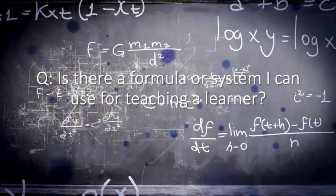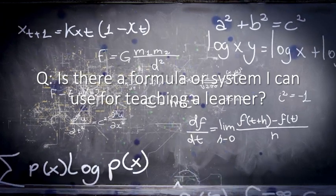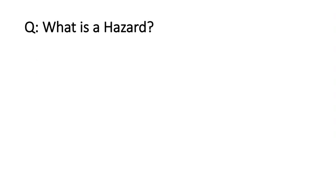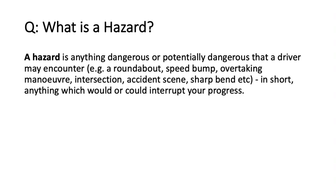Is there a formula or system for teaching a learner? One such system is the system of vehicle control. The system of car control is a drill, each step of which is to be considered in sequence by the driver at the approach to any hazard. A hazard is anything dangerous or potentially dangerous that a driver may encounter — for example, a roundabout, speed bump, overtaking maneuver, intersection, accident scene, sharp bend, etc. In short, anything which would or could interrupt your progress.